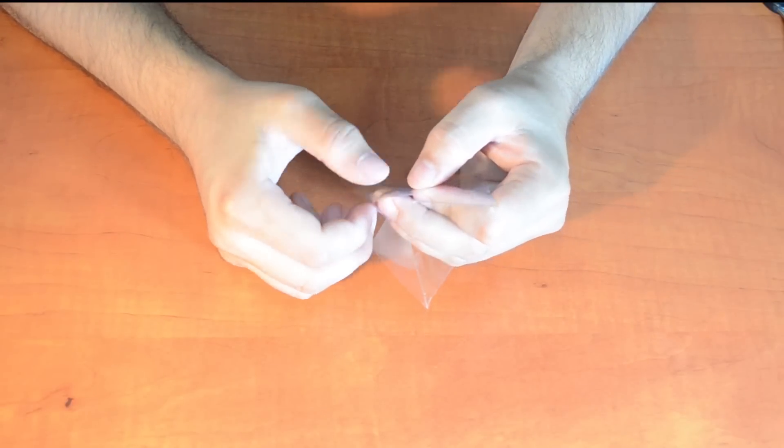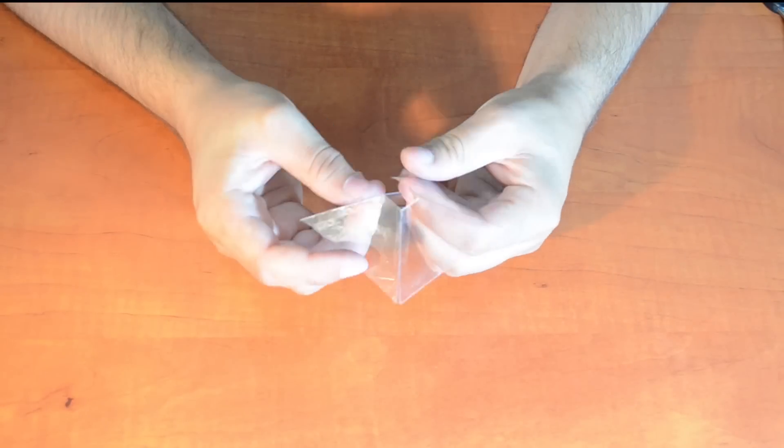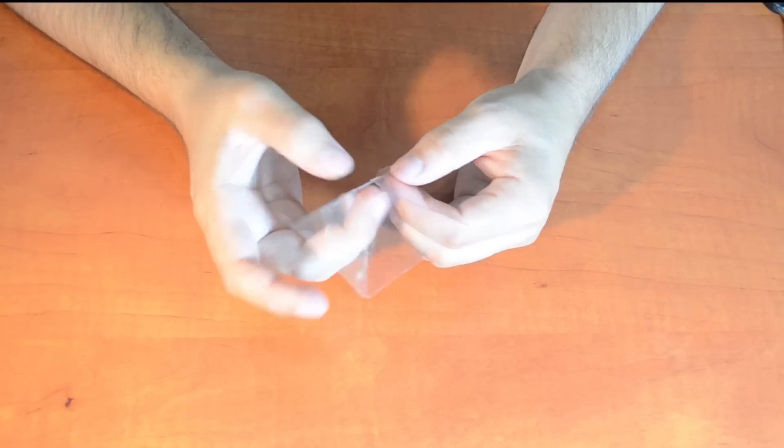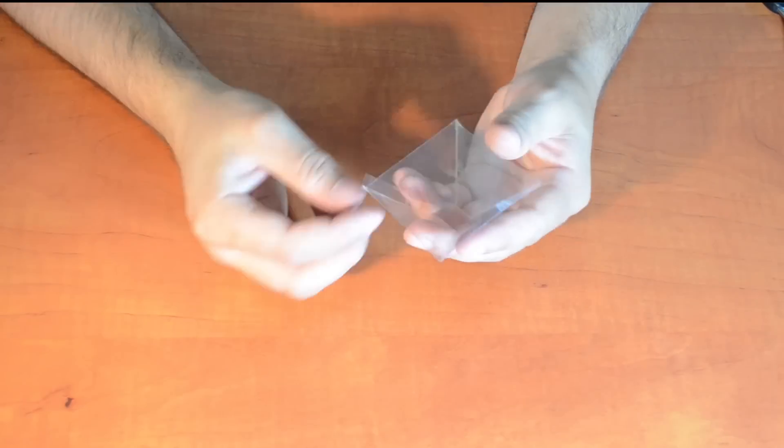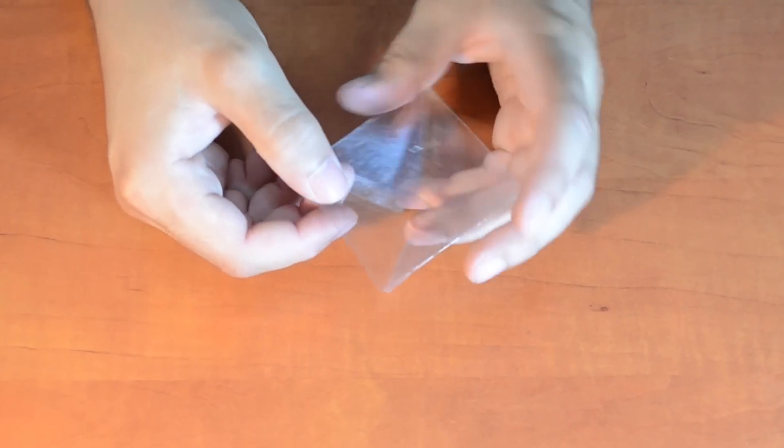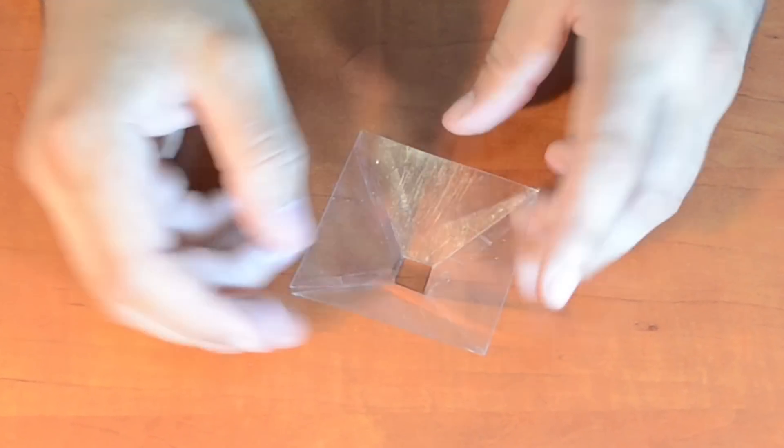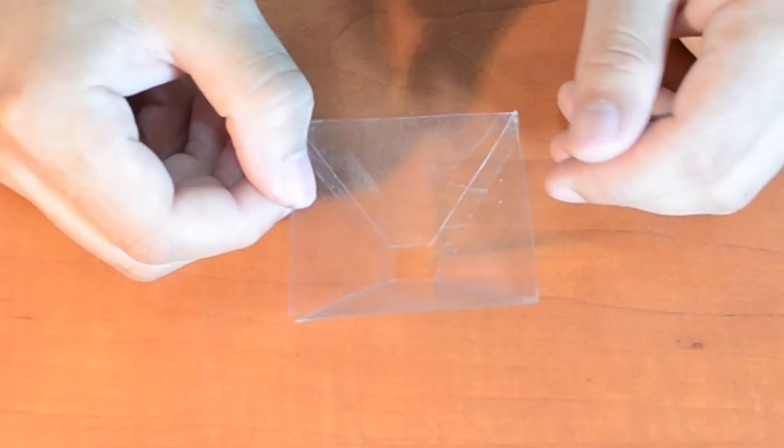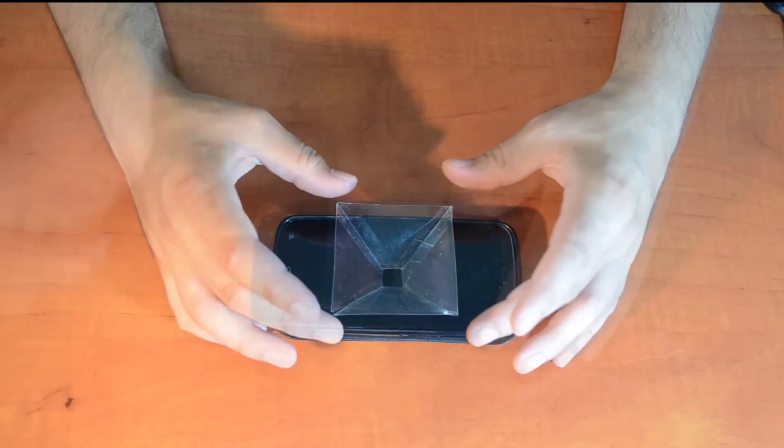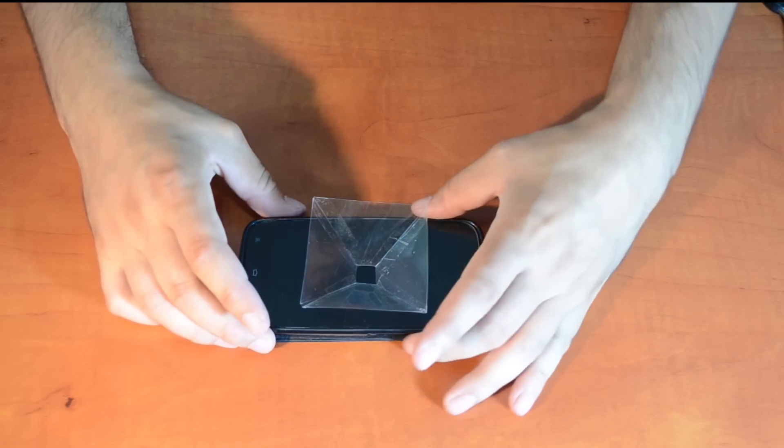As you can see, this method is much easier and faster than cutting and gluing a CD case. You should end up with something that looks like this. Finally, put the pyramid on top of your smartphone and play the hologram video.